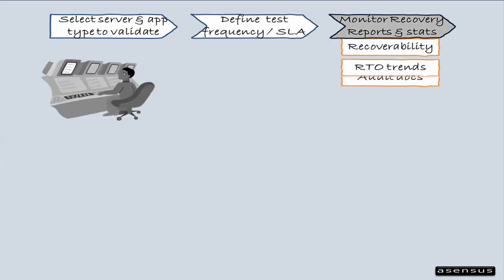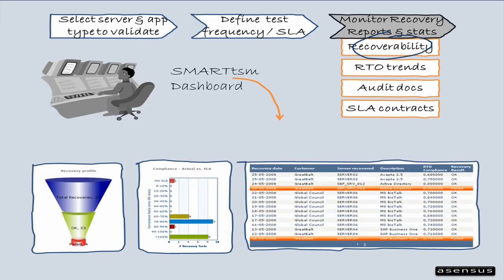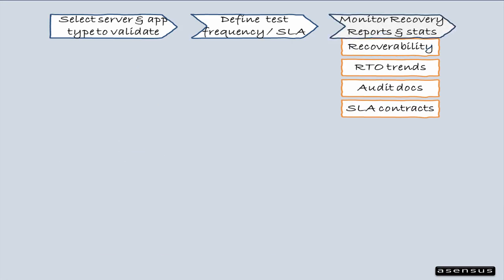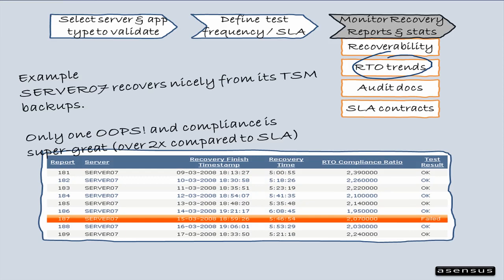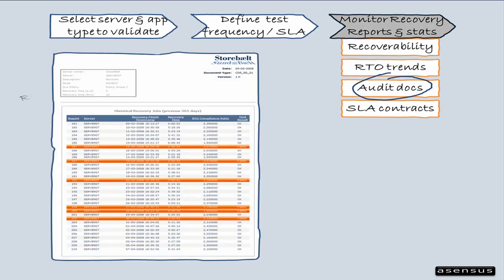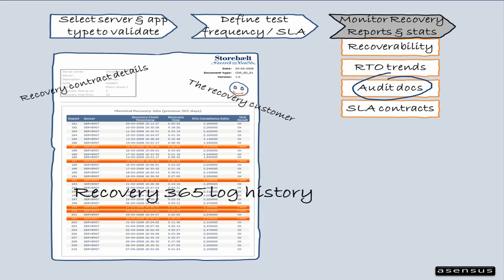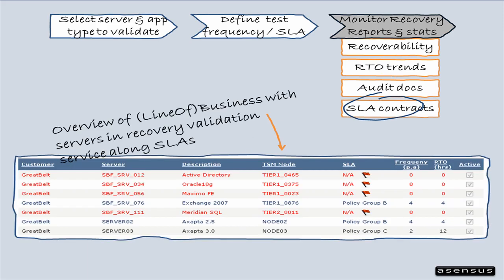Every recovery process feeds the management console. For instance, the dashboard tells you how tests comply with the SLA, the number of failed tests, and tests in the green zone. Audit trend reports track recovery time developments, and audit docs provide 365 logs for all test activities along with results. Furthermore, the console carries full documentation and client recovery contracts.